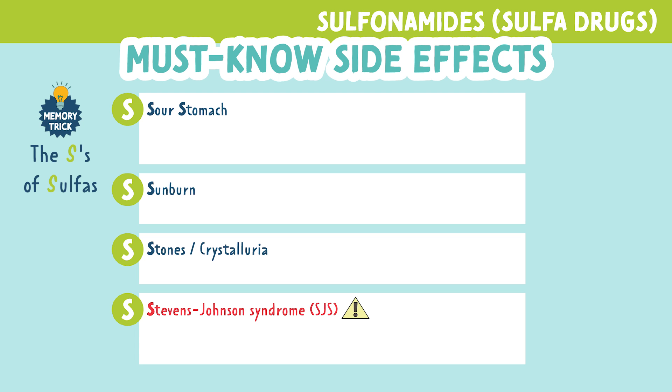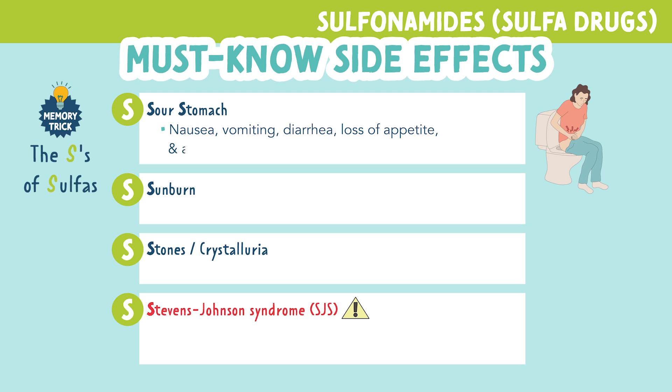The first S is sour stomach — things like nausea, vomiting, diarrhea, loss of appetite, and abdominal tenderness.